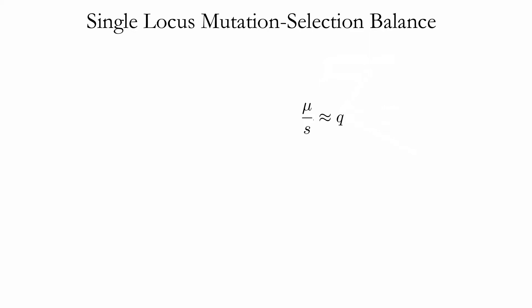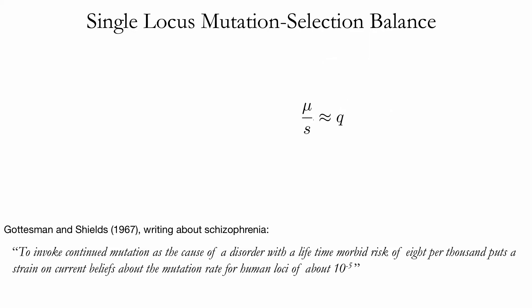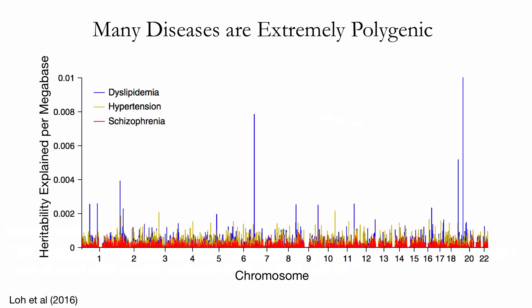It became clear as soon as the first per-gene mutation rate estimates became available that this model is insufficient in many cases. As Gottesman and Shields pointed out while writing about schizophrenia in 1967, it's just implausible that a disease with a prevalence of nearly 1% could be maintained by mutational pressure alone at a single gene. Along with the fact that many diseases don't segregate within families according to anything resembling Mendelian ratios, this led them and many contemporaries to suggest a polygenic mode of inheritance — and of course they were right.